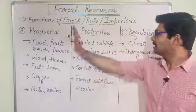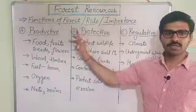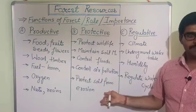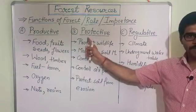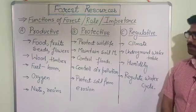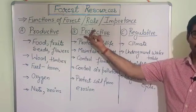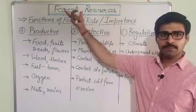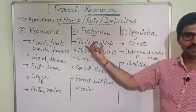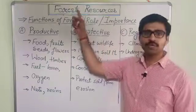The productive function can also be called the direct role of the forest. From forests we get food, fruits, seeds, flowers, wood and timber, fuel in the form of dry leaves, and most importantly, oxygen. We also get nuts, wood for furniture, and wood for paper.